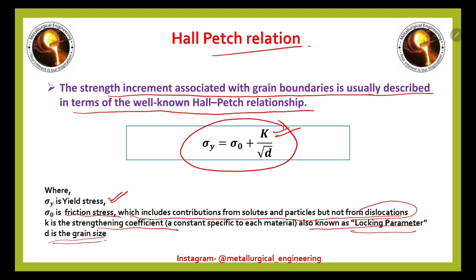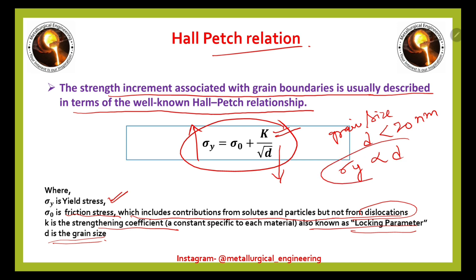This is the direct Hall-Petch relation: if we decrease the grain size, the yield strength of the material increases. In contrast, the inverse Hall-Petch relation applies when the grain size d is less than 20 nanometers. In that case, sigma Y is directly proportional to grain size — if we decrease d, sigma Y also decreases.